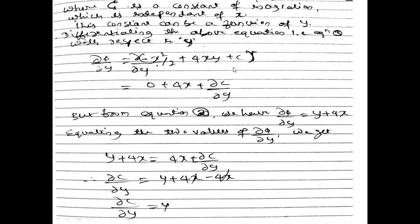So ∂φ/∂y = 4x + ∂C/∂y. From equation number two, I know that ∂φ/∂y = y + 4x. Substituting: y + 4x = 4x + ∂C/∂y. Therefore ∂C/∂y = y + 4x - 4x. The 4x terms cancel, giving ∂C/∂y = y.